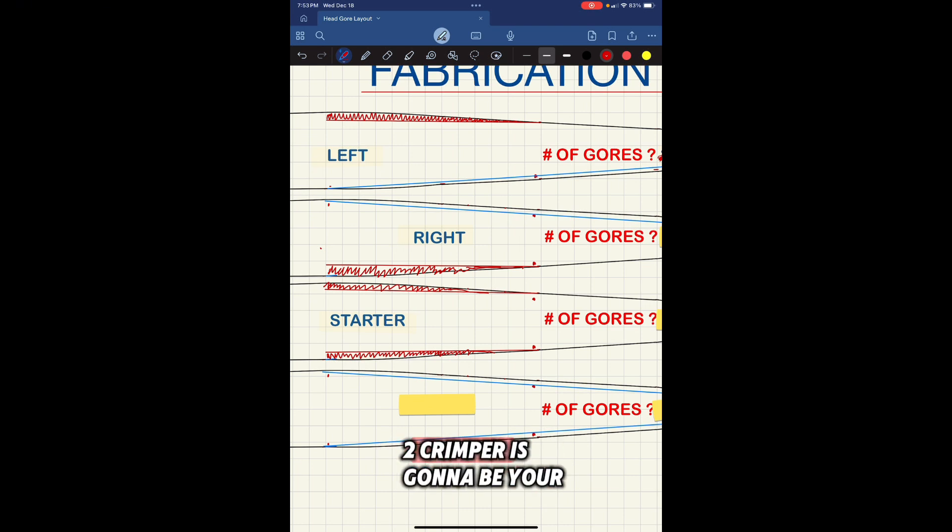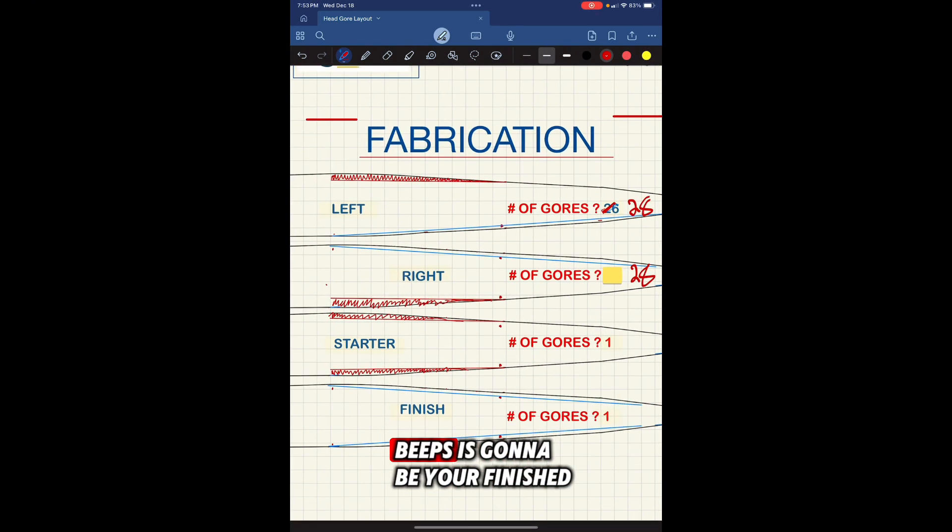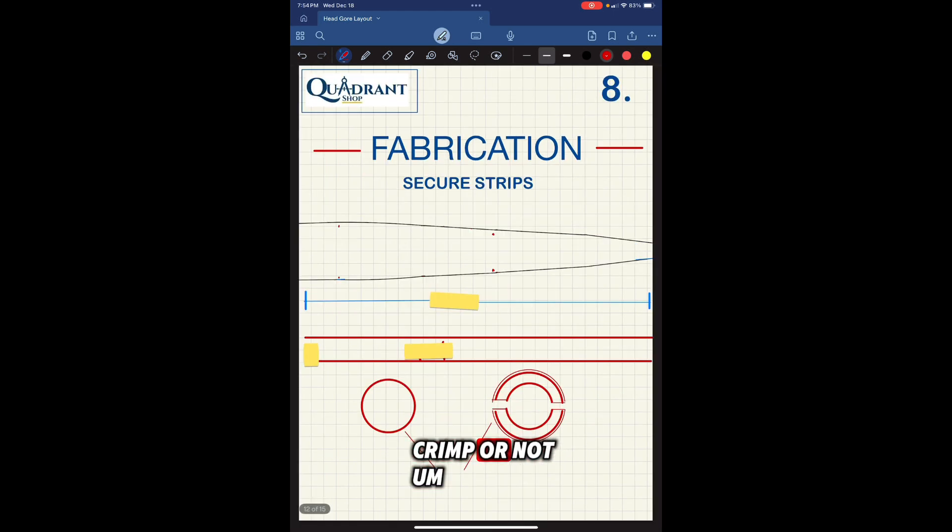The one with the two crimps is going to be your starter gore, and the one with the two beads is going to be your finished gore. You're only going to need one of each for this section. Make sure you cut out an extra gore and don't crimp it or bead it yet, just so in case you do need it, you already know which gore to crimp or not.